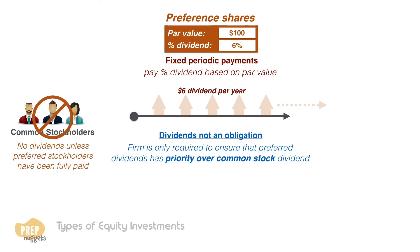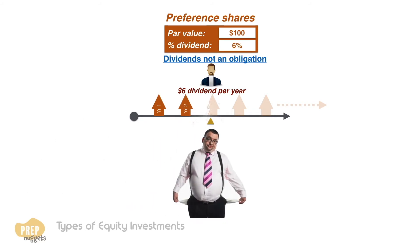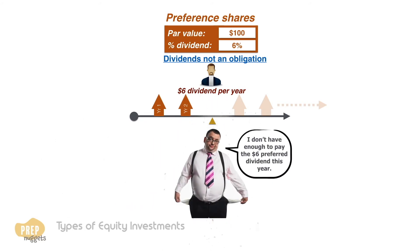The firm is only obligated to ensure that preferred stock dividends have priority over common stock dividends. That is, the 6% dividend must be paid to preferred stockholders before the company can declare any dividends to common stockholders for the year. Even so, some companies may have difficulty paying the preferred dividends — for example, the firm may not have enough to pay the preferred dividend in the third year.